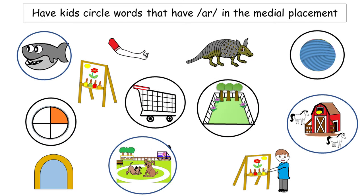The answers for the medial A-R activity are: shark, yarn, part, cart, yard, farm, and park.